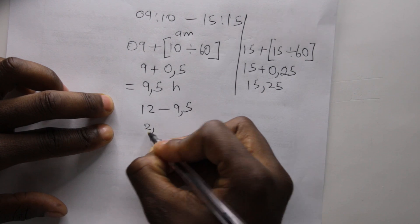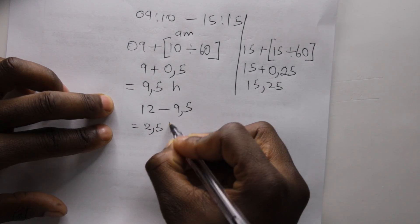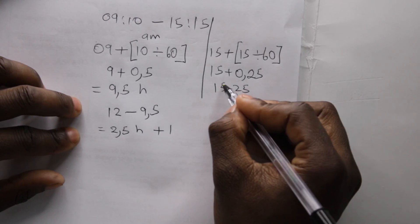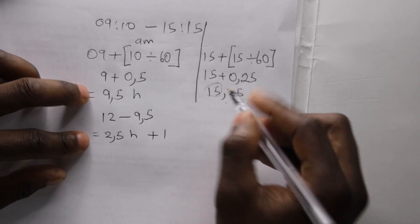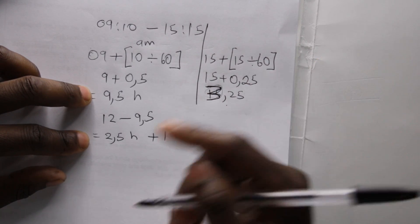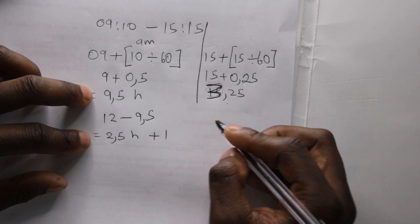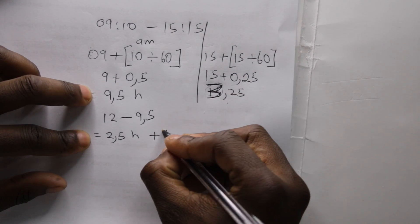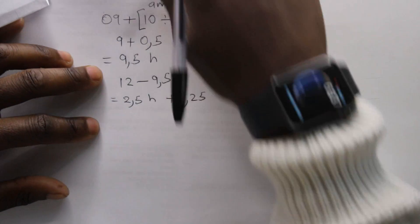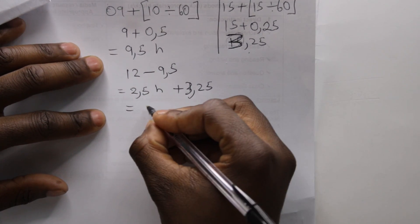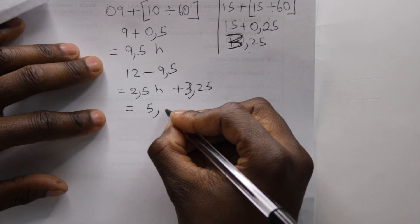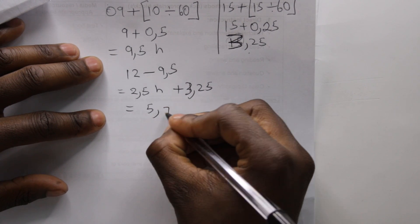Then we must add to the, here we won't write 15, we'll write 3. Hence 15 represented 3 but after 12 which is afternoon, 3.25. Then the answer will be 5.75 hours.